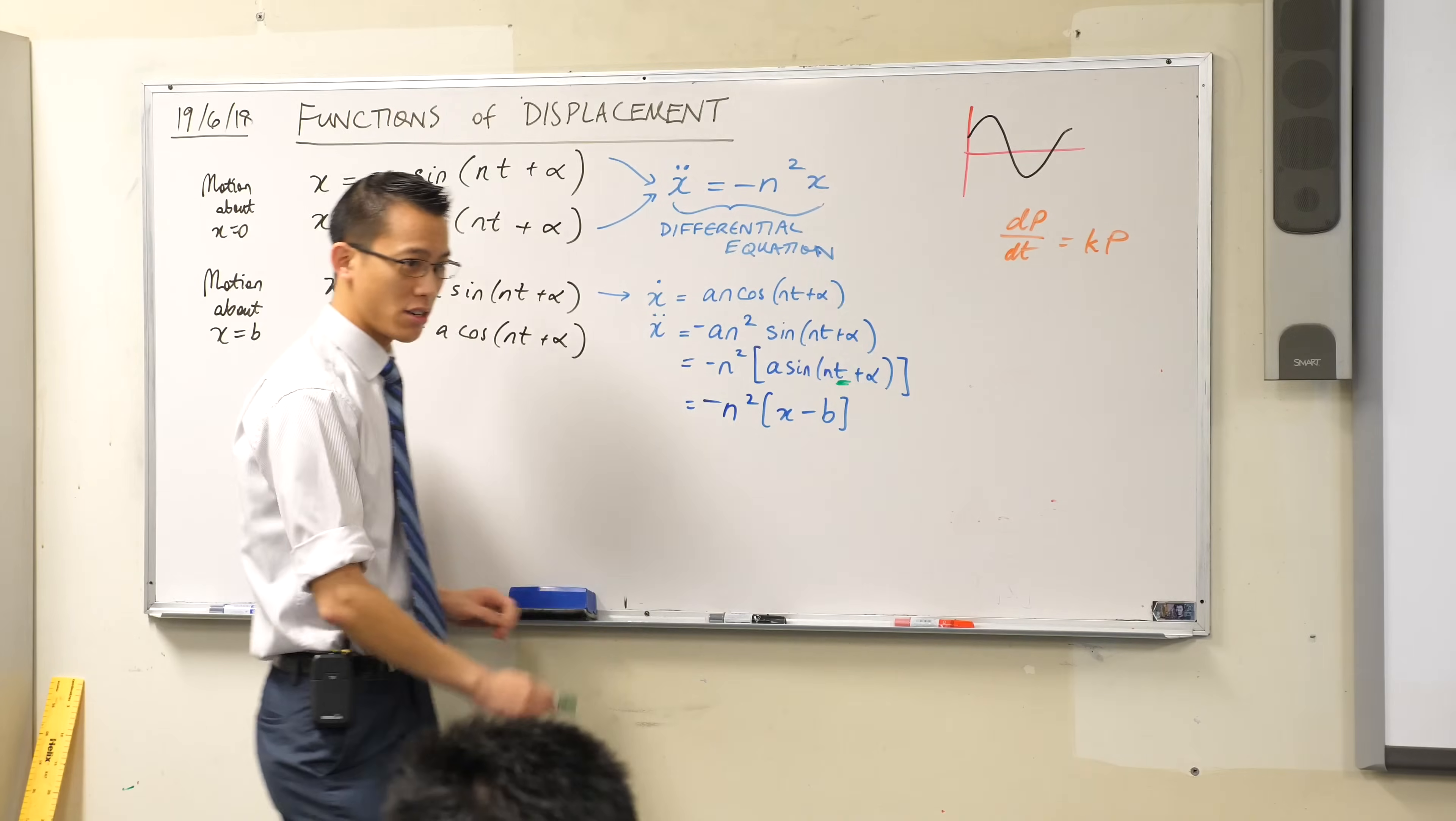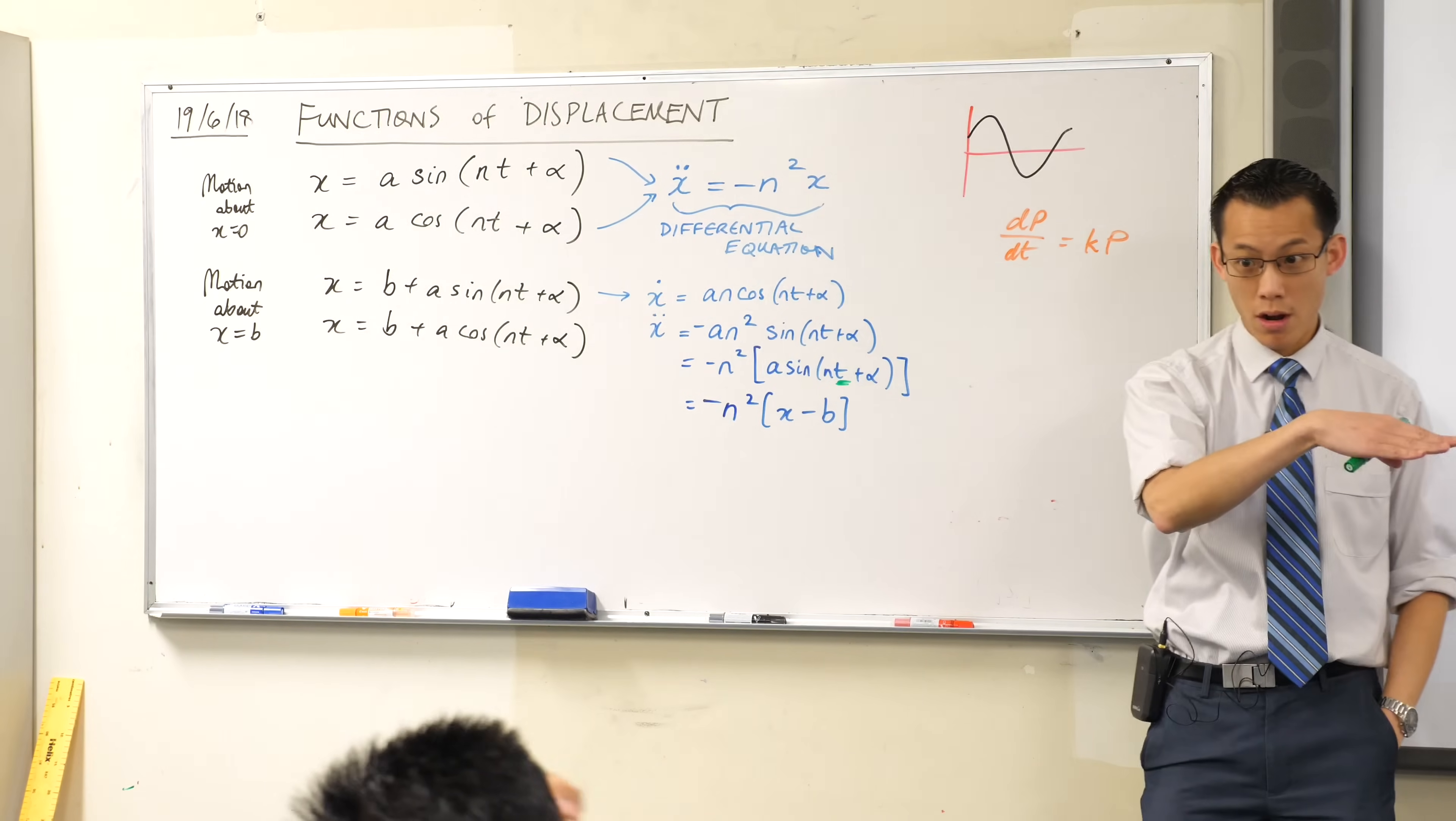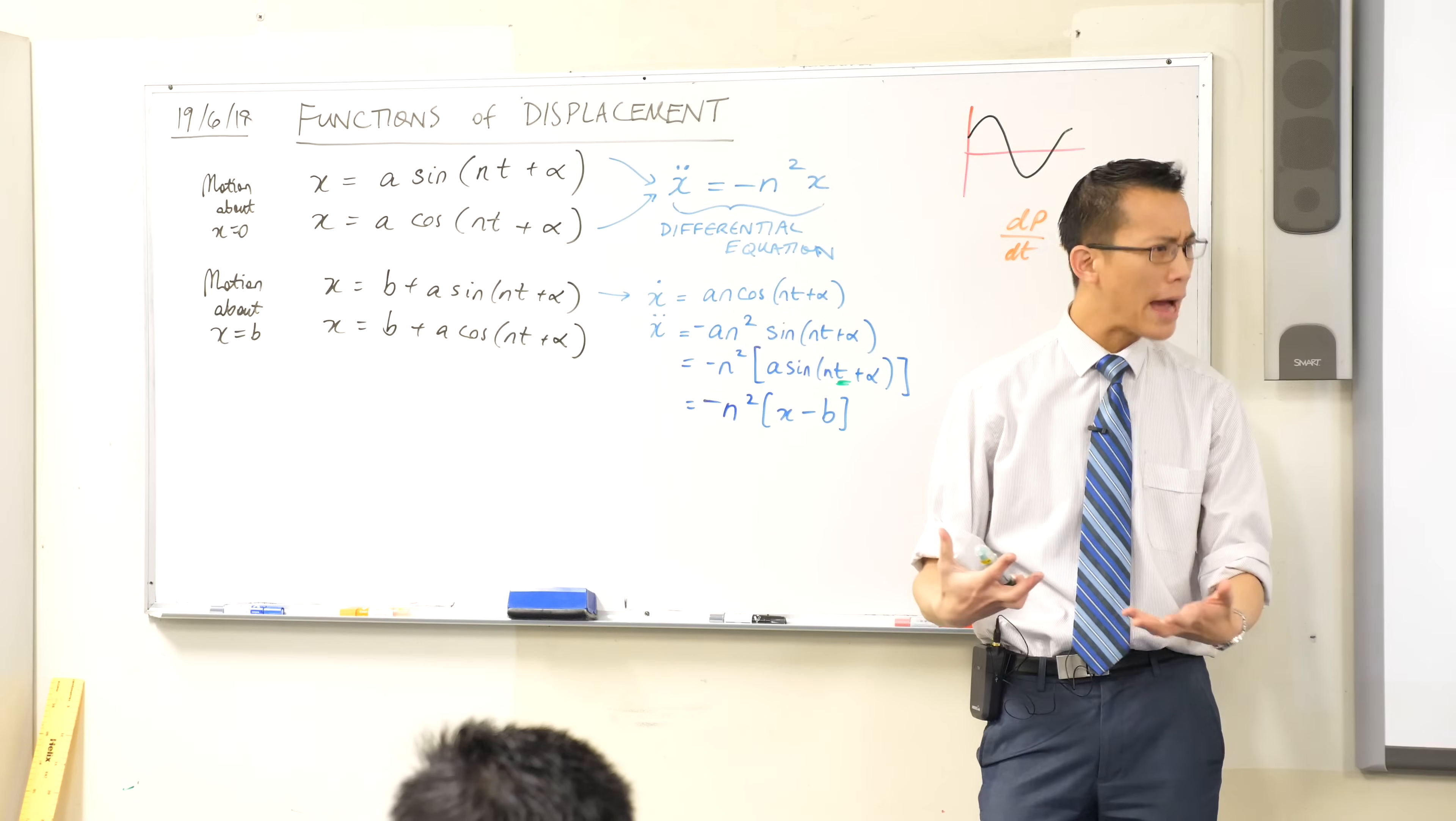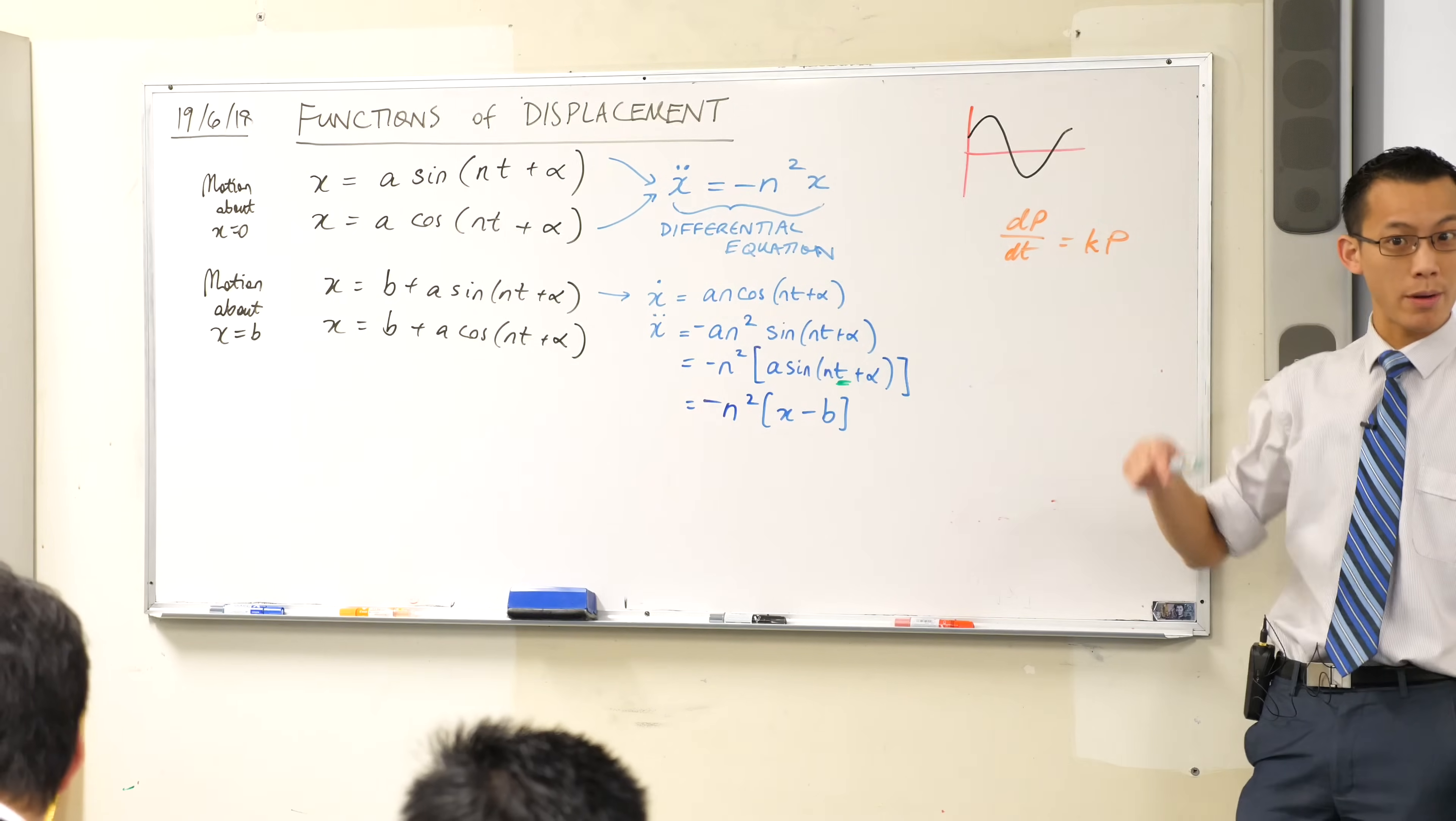Do you remember that exponential growth and decay didn't always look like that? If you weren't going down to zero, or starting from zero, we talked about modified growth and decay. You got an ever so slightly different differential equation. Do you remember that?